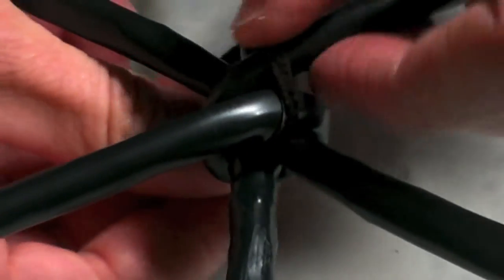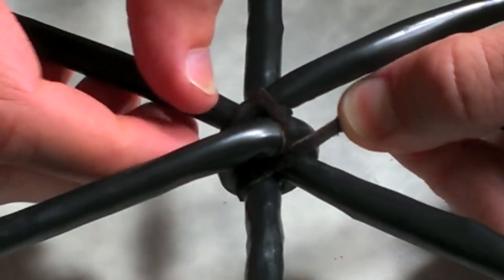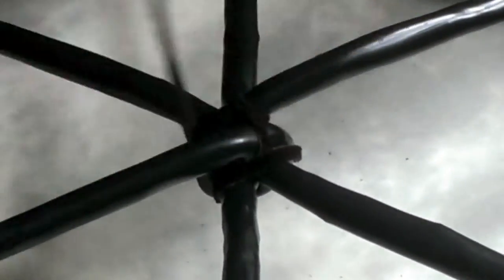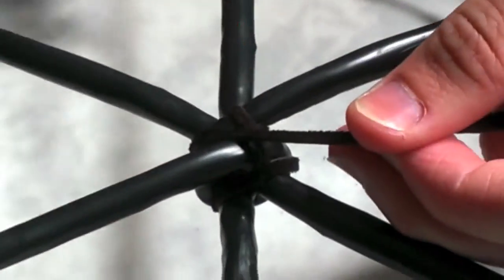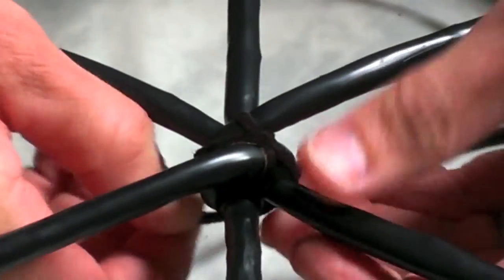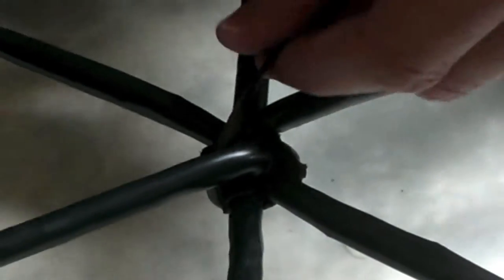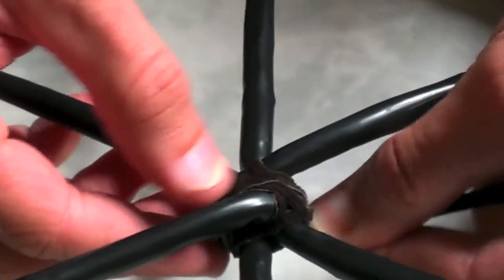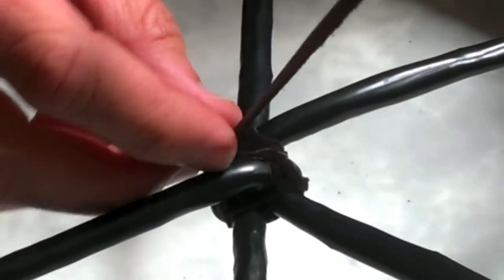When you're wrapping, just keep it snug, always keep pressure on it. Maybe go around this four or five times and then you can start going out on one of these legs of the handle. I usually wrap it enough so I can at least cover that small end that was showing and kind of reinforce that with the other bits that you'll use.